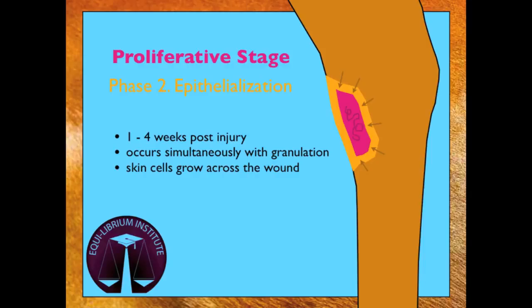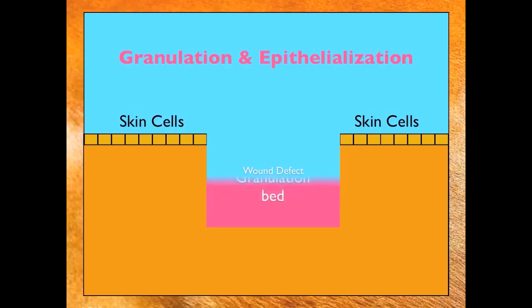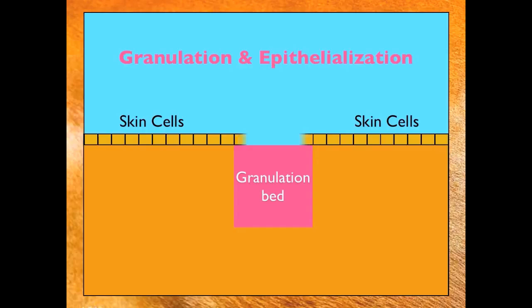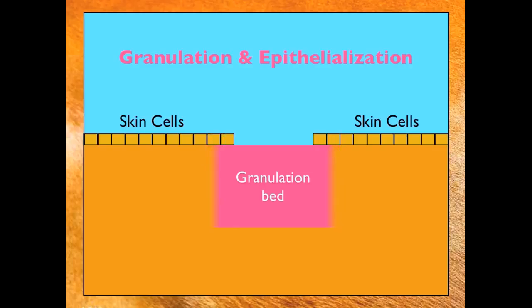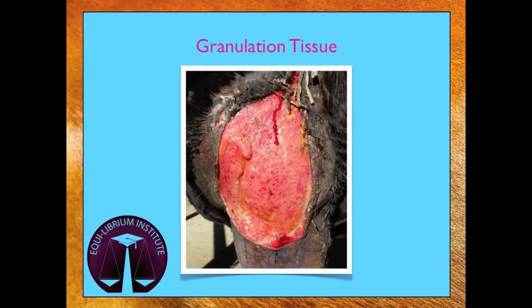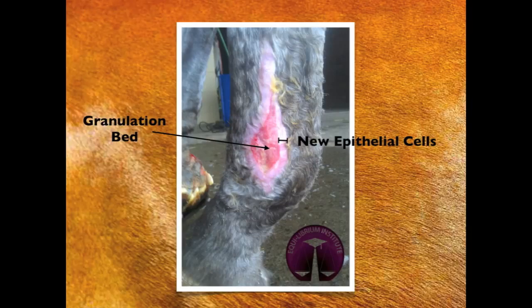Once the defect has filled in with granulation tissue, the second phase of the proliferative stage begins. During this phase, skin cells grow across the surface of the granulation bed. This animation demonstrates a wound filling in with granulation tissue prior to the advancement of skin cells across the surface of the granulation bed. This image shows a wound that has completely granulated and new epithelial cells are beginning to migrate across the surface of the granulation bed.